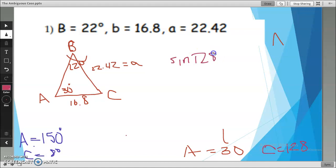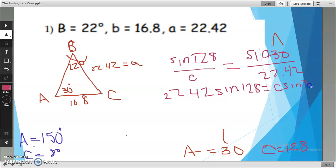Sine of 128 over C equals sine of 30 over 22.42. Cross multiplying, sine 128 times 22.42 equals C sine 30. Divide both sides by sine 30, and I get C is equal to 35.03.